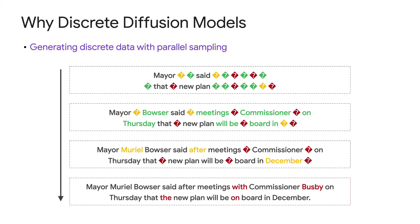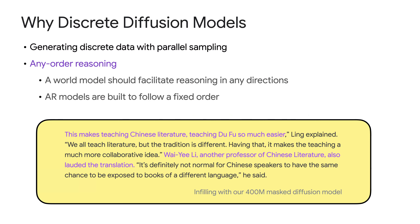This is where the idea of diffusion models comes in. In diffusion models, you generate data not token by token in sequential order, but you actually generate multiple tokens in parallel. This is why we're interested in diffusion models for discrete data — it enables parallel sampling. Here's one example of generating text from a discrete diffusion model: tokens in the same color are unmasked and generated at the same time, making it more efficient.